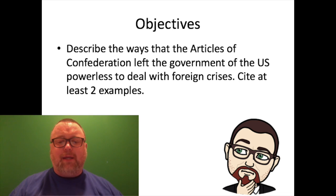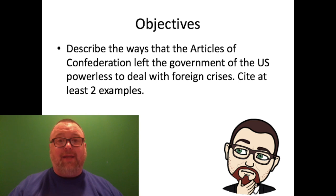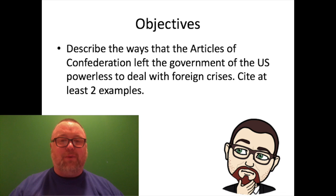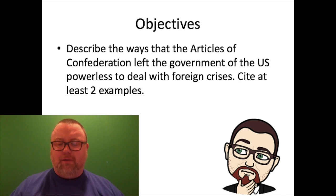Today I'd like you to be able to describe the ways the Articles of Confederation left the U.S. in a powerless position to deal with foreign crises. There were a number of foreign policy problems for America in its infancy — the first few years after winning the Revolution. We won the war, but now things get really hard because you have to start a country. I'd like you to describe those ways the Confederation left the U.S. powerless and give at least one or two examples to back up your claim.